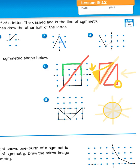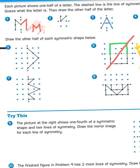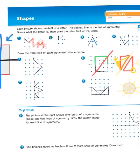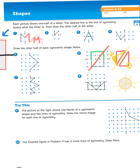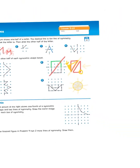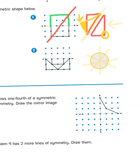Let's look at one more, let's actually take a look at number nine. The picture at the right shows one-fourth of a symmetric shape and two lines of symmetry. Draw the mirror image for each line of symmetry. So what we need to do for just a moment is we need to approach this part of our drawing here as its own shape.